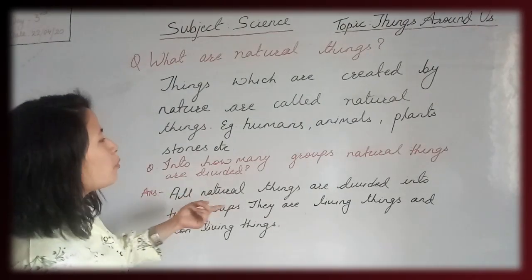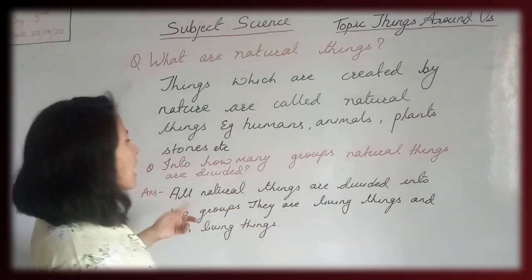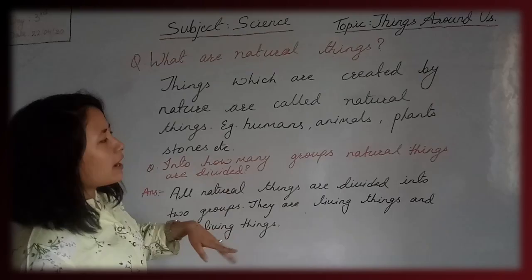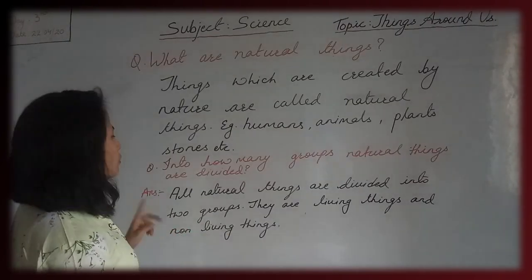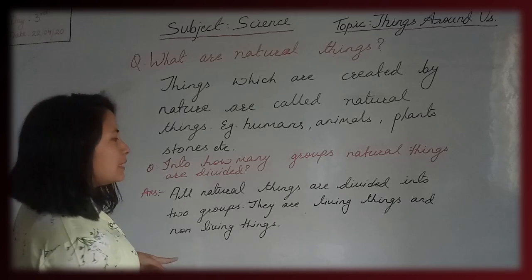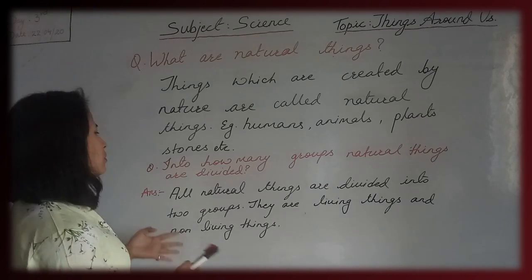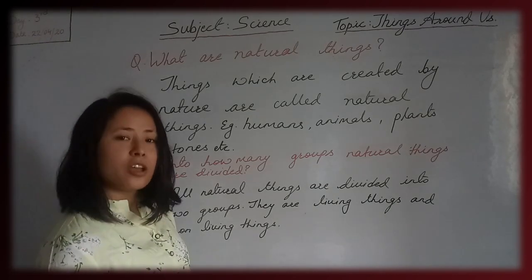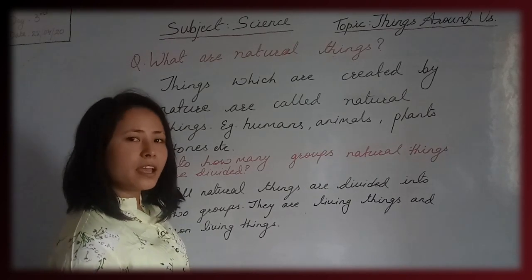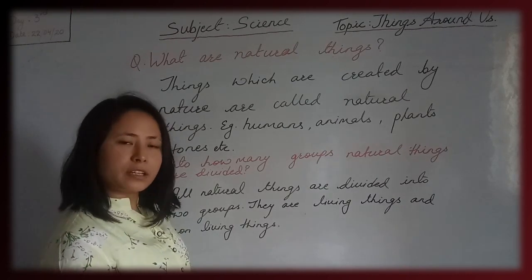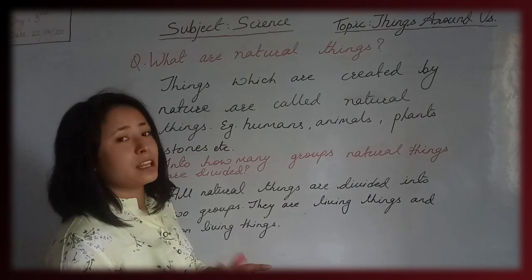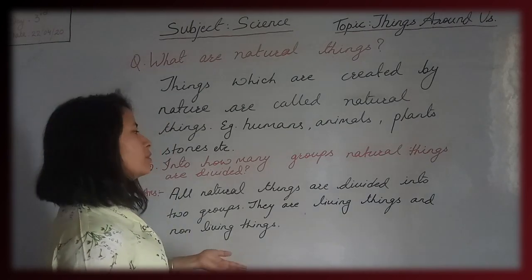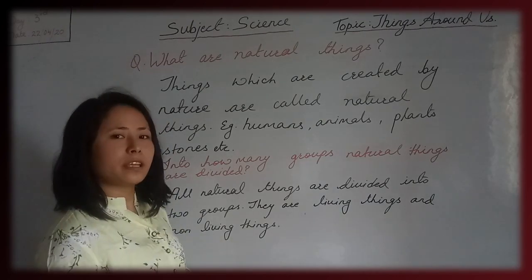Into how many groups are natural things divided? All natural things are divided into two groups. They are living things and non-living things. One is living things and the other is non-living things.